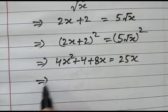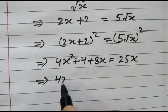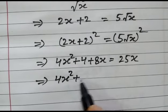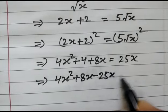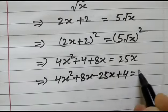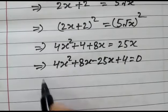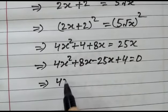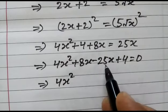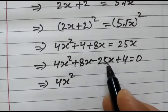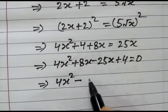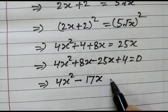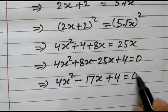We again rearrange this equation. We get 4x square plus 8x minus 25x plus 4 is equal to 0. 4x square, 25 minus x and 8x. This will result minus 17x plus 4 is equal to 0.